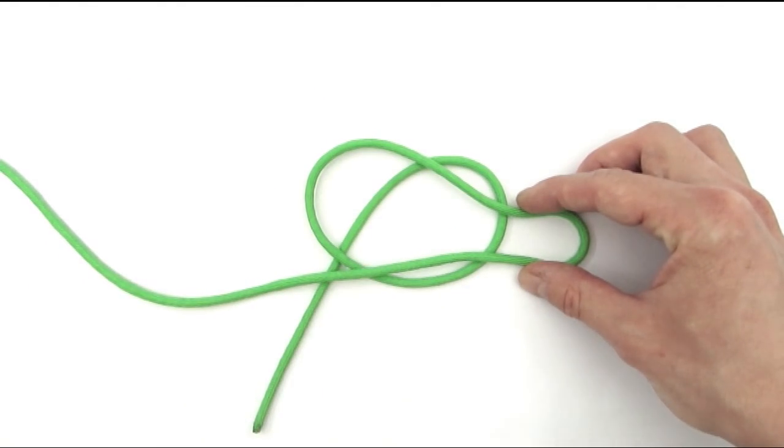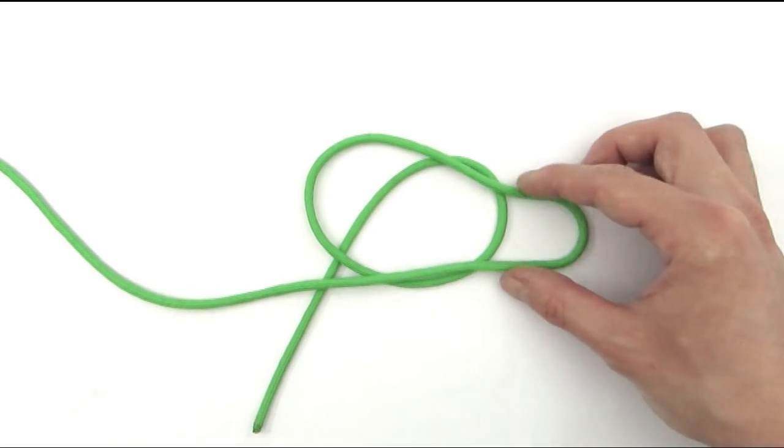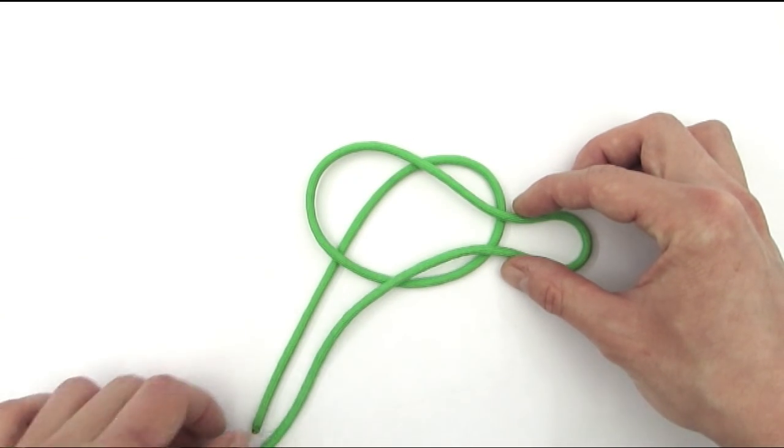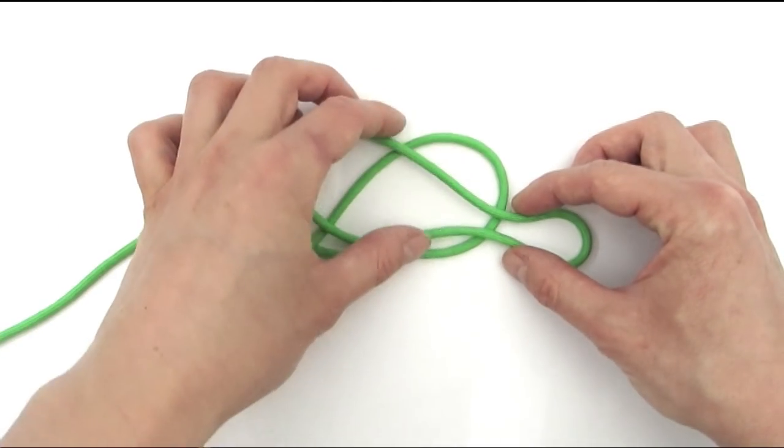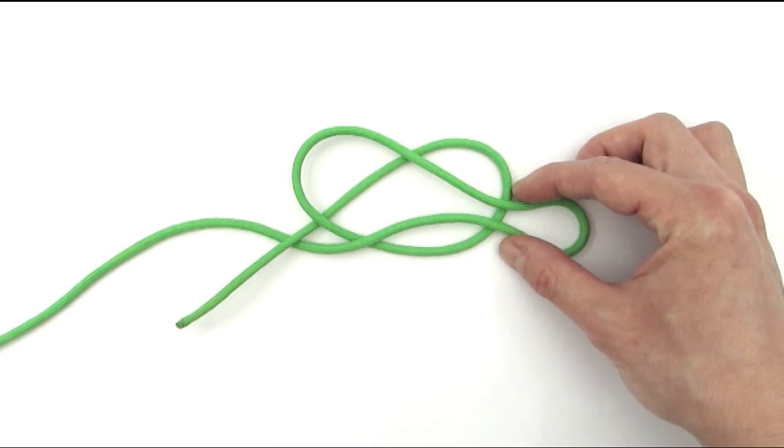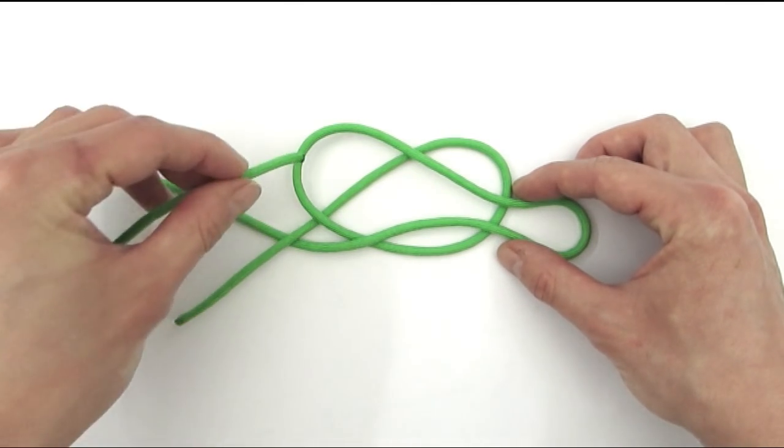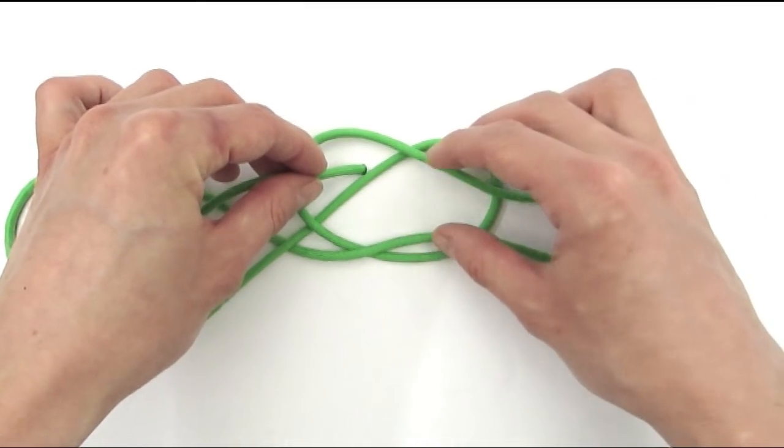So like this, over 2. I'm then going to pass my working end under the standing end like this and then I'm going to enter the knot going over under.